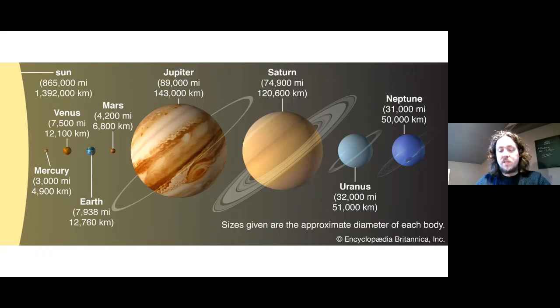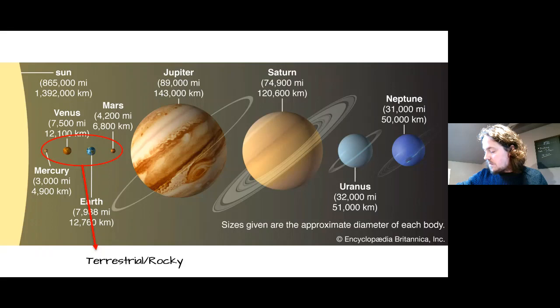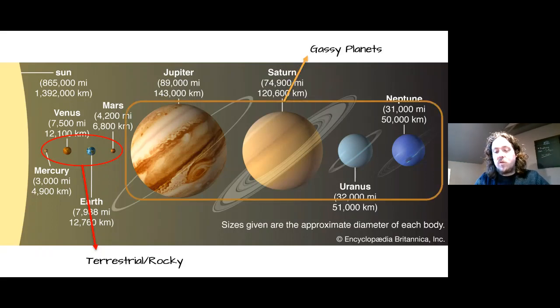You'll notice that there are some big differences between them, especially the inner ones. These first four—Mercury, Venus, Earth, and Mars—we call these terrestrial planets. Don't freak out about the word terrestrial; they're rocky planets. Then the next four we call the gassy giants. These are gassy planets, obviously giant because they're so much bigger than the inner planets.